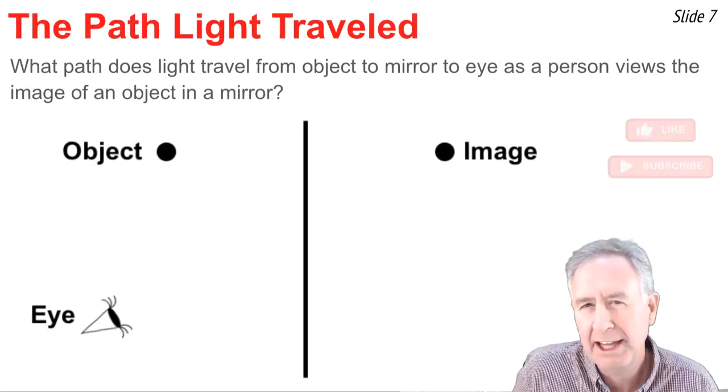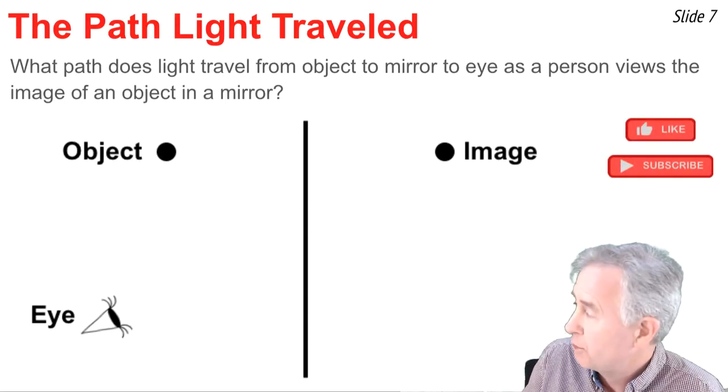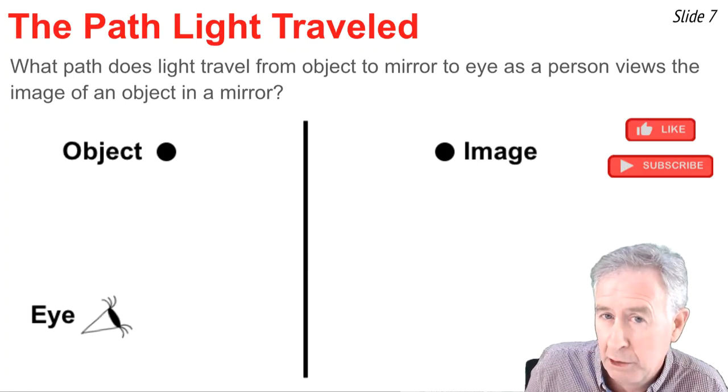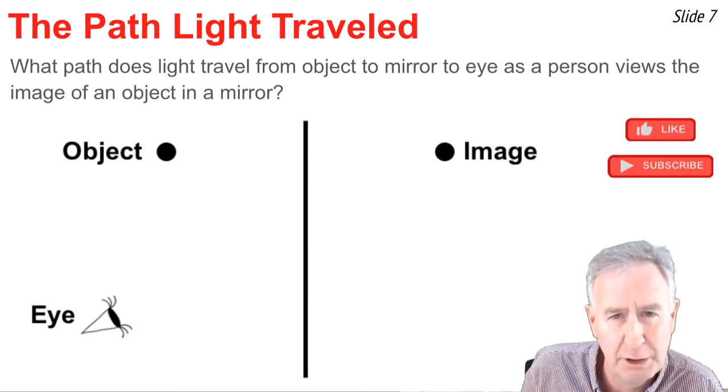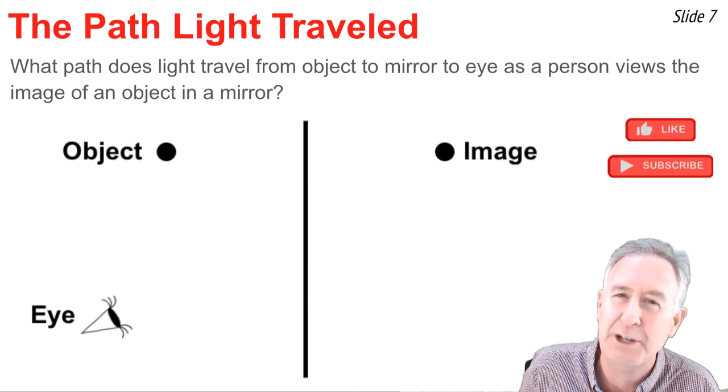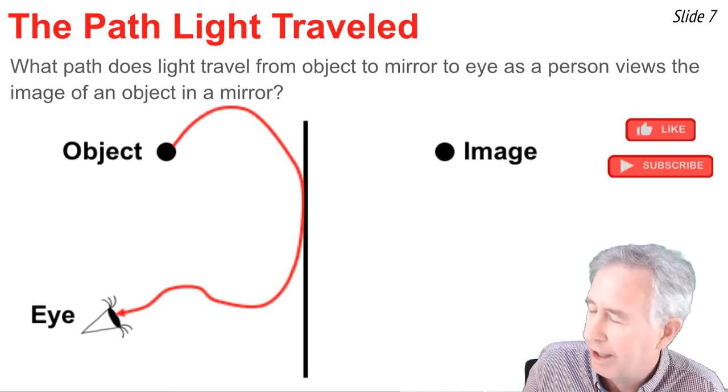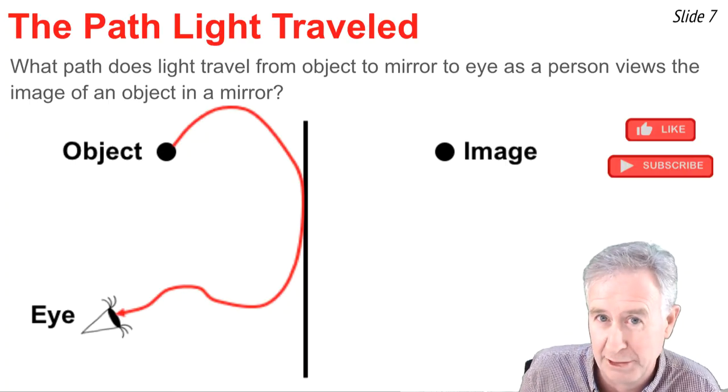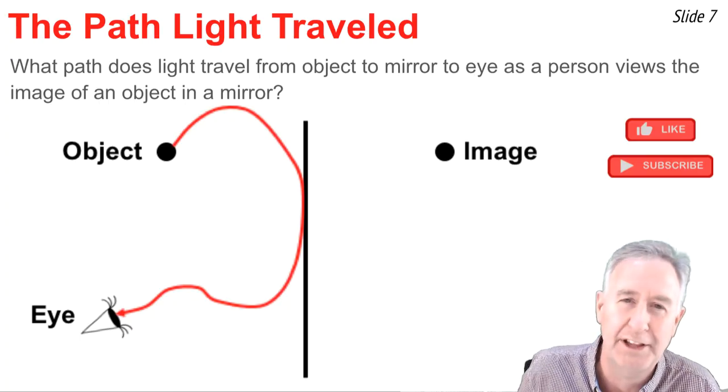We're going to do a thinking reflecting exercise. I'm going to give you a proposed pathway for light traveling from the object to mirror to eye. And you want to decide is it correct or not. And correct or incorrect. And then if incorrect, what's wrong with it? So here we go. Here's our first choice. Is this correct? Is this how light gets from object to mirror to eye? And the answer is no, certainly not. And thank you for getting that one right. It has to travel in a straight line.